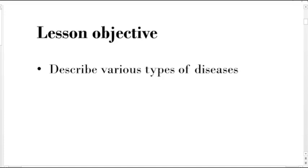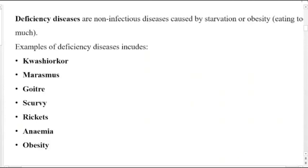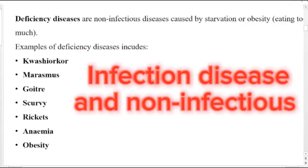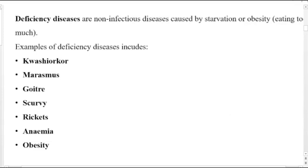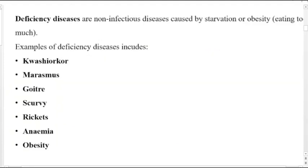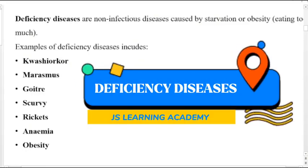At the end of this lesson, you should be able to describe various types of diseases. So let us now look at various types of diseases. In our previous lesson, we did look at many groups of diseases — we have infectious and non-infectious diseases. We also looked at the types of diseases: deficiency diseases, genetic diseases, social diseases, and so on. In this lesson, our main focus is on deficiency diseases.